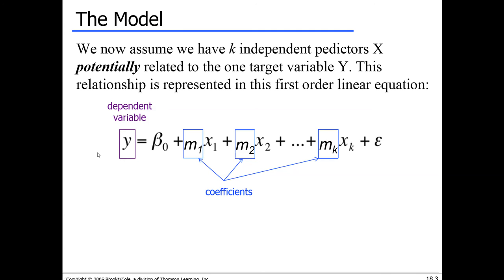My model was b plus m times x. Now that I include multiple different predictors x1, x2, through xk — I can have as many as I want — each one of them has to be multiplied by a coefficient, the slope. So I have multiple different slopes in my model. The difference between simple and multiple regression is that now I want to determine the values for the intercept and many different slopes.